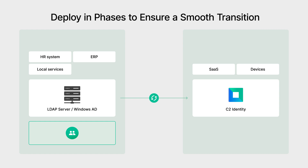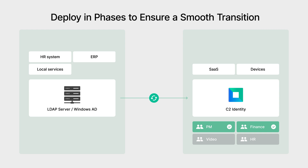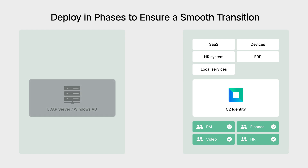Initially, you may still prefer sticking with your existing IAM system to manage accounts and users — this is fine. Just remember that when you add new users or groups, their data will automatically sync with C2 Identity. Your Windows AD or Synology LDAP server can sync with C2 Identity, meaning you'll be able to manage permissions and access directly within the cloud. We recommend introducing C2 Identity gradually, starting with a small group or department, working through any issues, then expanding to the whole organization. Once all user data is synced, you can move all systems over and stop maintaining the old servers.